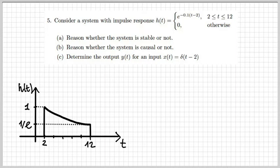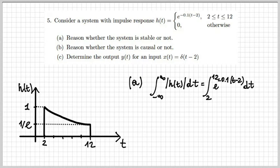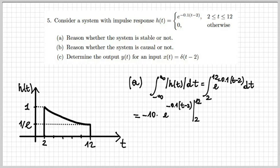Let's start by drawing the impulse response h(t). It's a right-sided exponential defined between 2 and 12 in the time domain. The maximum value is 1 and then it decreases down to 1 over e. To answer whether the system is stable or not, we need to calculate the integral of the absolute value of h(t) dt. If the impulse response is absolutely integrable, meaning that this integral is finite, then the system is stable. The integral between 2 and 12 of e to the minus 0.1(t−2) dt gives us 10 times (1 − e^{−1}), which is clearly finite. Therefore, we can conclude that the system is stable.